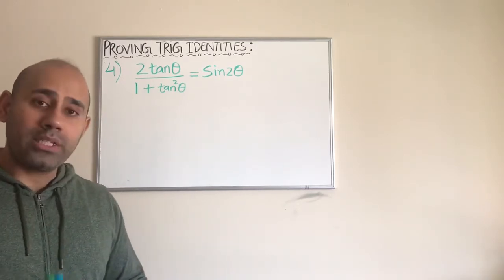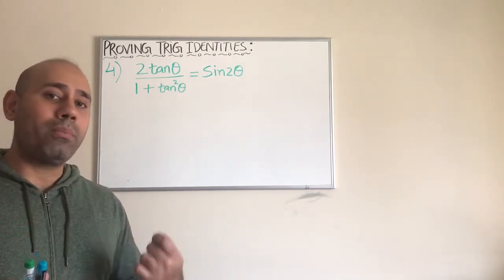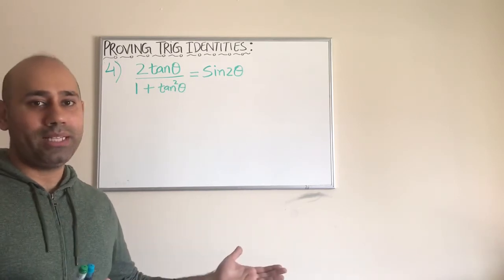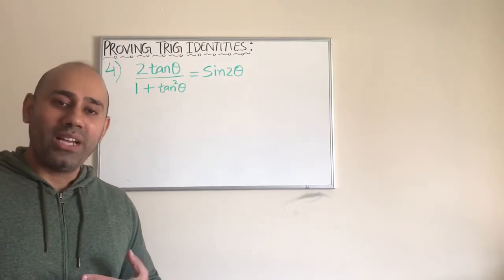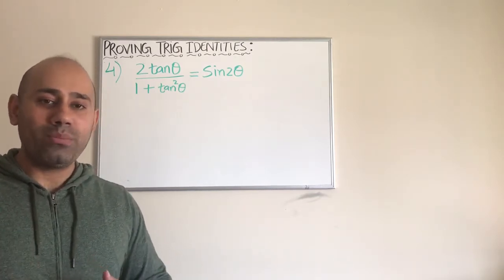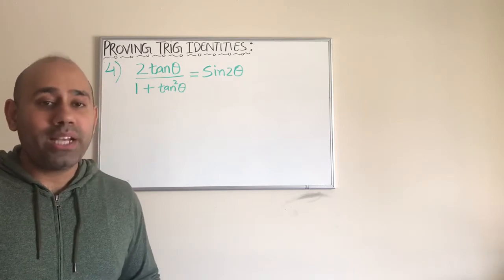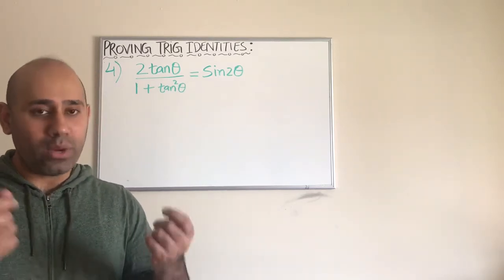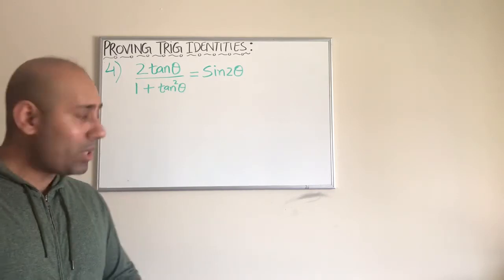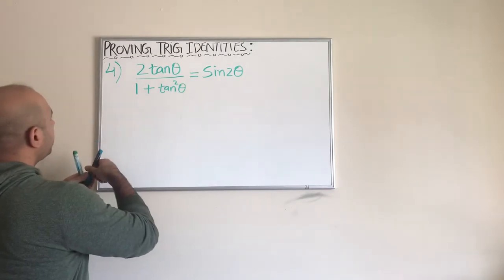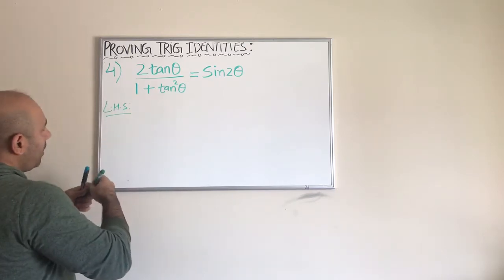Once we decide to start with the left hand side, go ahead and see what we can do — how we can simplify it and what identities we can use. Keep in mind you have to have a formula sheet in front of you at all times when doing something like this, whether you're in the classroom or working at home. Get a formula sheet so all the formulas are listed in one place rather than going back and forth in the textbook. Now let's look at the left hand side.